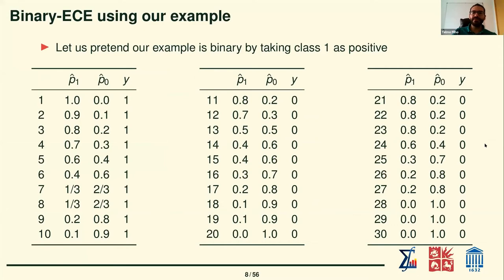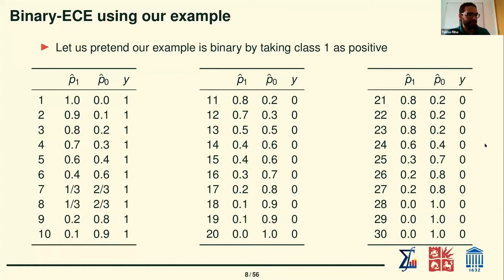We had a multi-class example but were talking about binary ECE. To apply it, we pretend our example is binary and take class one as positive, making classes two and three together the negative class. This gives us binary probabilities: probabilities for class one remain as-is, and probabilities for the negative class are just the sum of probabilities for class two and three. This gives a binary problem on which we can run binary ECE.